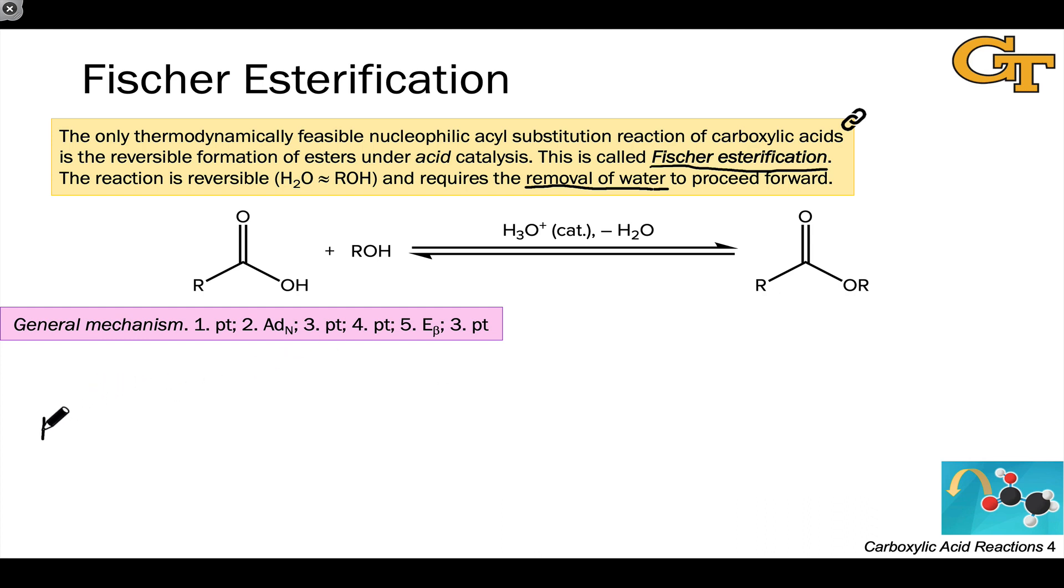The mechanism of Fischer esterification is the microscopic reverse of the acidic ester hydrolysis. So we start with the carboxylic acid, and as in all acid-catalyzed reactions, we protonate the carboxylic acid using the acid catalyst, and the most basic position is the carbonyl oxygen of the carboxylic acid.